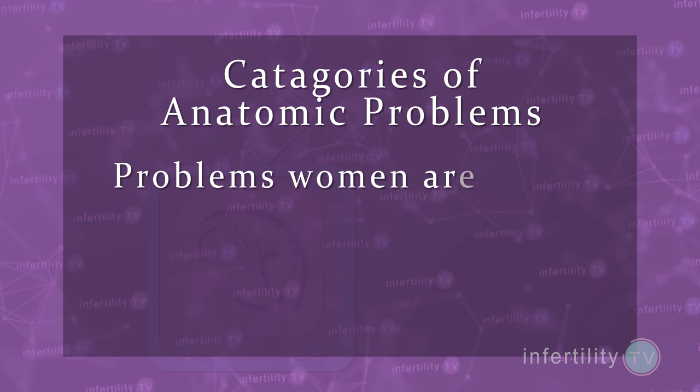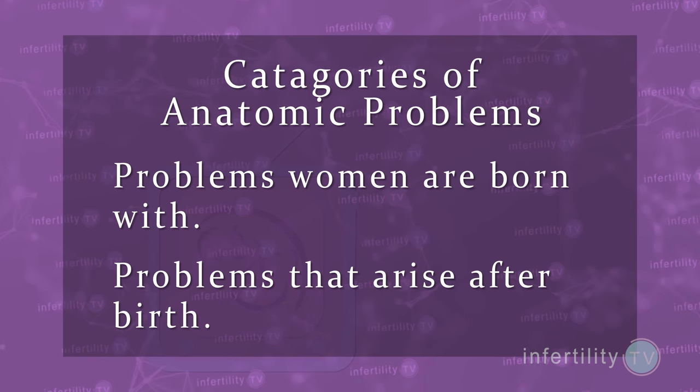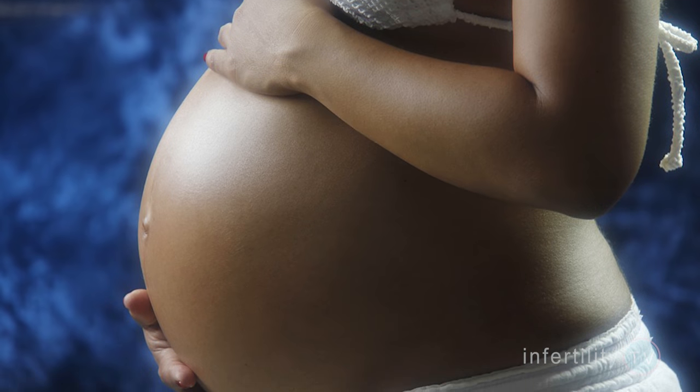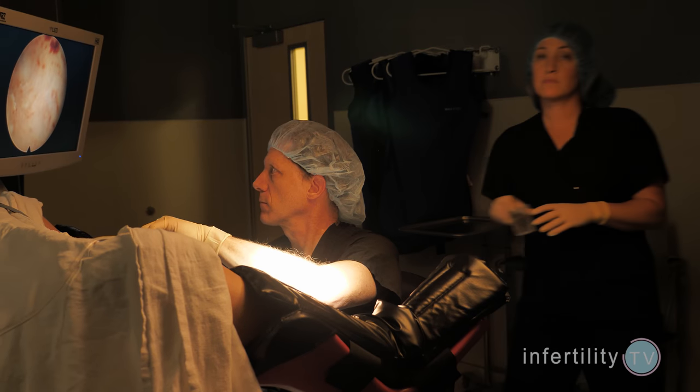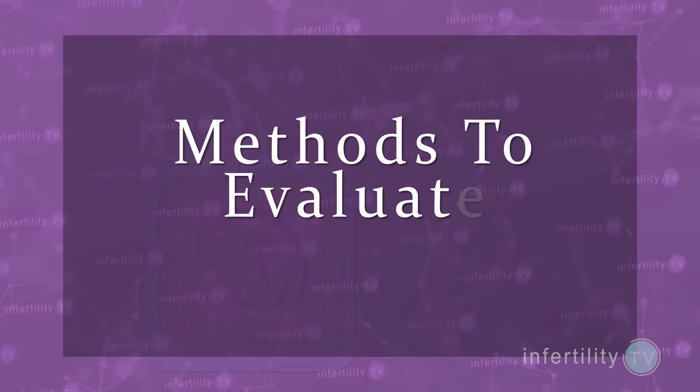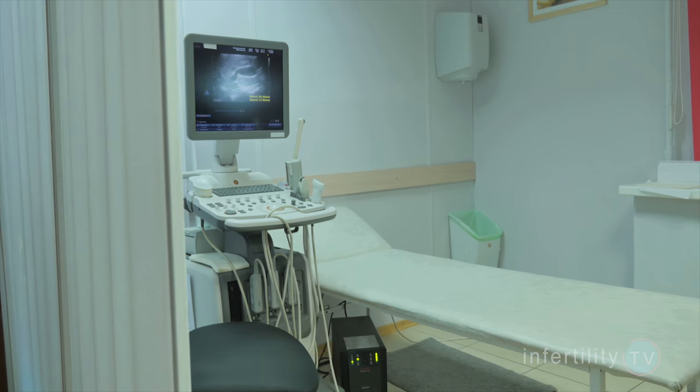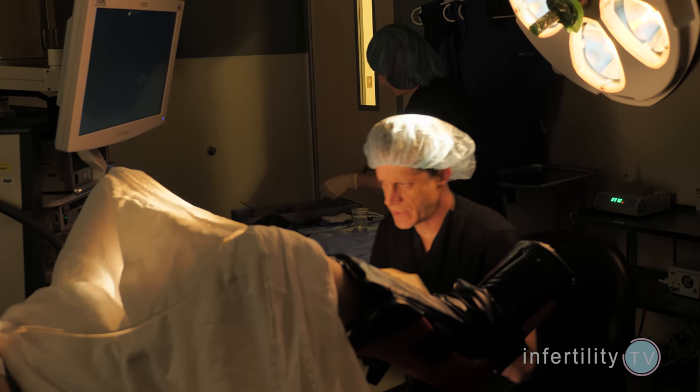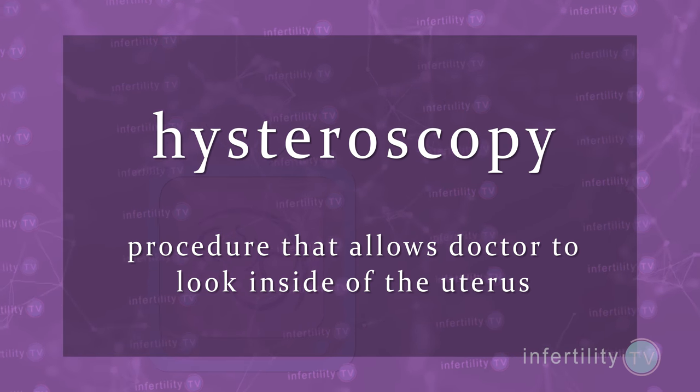First, let's talk about anatomic problems with the uterus. There are two categories: those that a woman is born with, and uterine problems that arise later after birth. Every woman who is going to attempt to conceive with IVF should have some sort of uterine cavity evaluation before having an embryo transfer. This is extremely important — even women who have been pregnant before and had a normal delivery should still have a uterine cavity evaluation. There are several different methods: x-ray, ultrasound, or directly with a telescope, which is called hysteroscopy. At IVF1, hysteroscopy is our favorite method for uterine cavity evaluation.